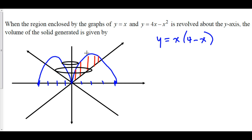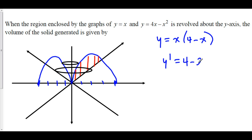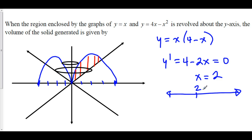To find the maximum of the parabola, we take the derivative: y prime equals 4 minus 2x. Setting this equal to 0 gives x equals 2. We confirm this is a maximum by checking that y prime changes from positive to negative at x equals 2 — plugging in 0 gives positive, plugging in 3 gives negative. So we have a local maximum at x equals 2.